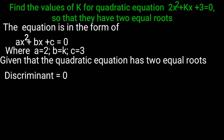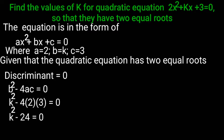b² - 4ac = 0, so k² - 4(2)(3) = 0. k² - 4(2) = 8, 8(3) = 24.